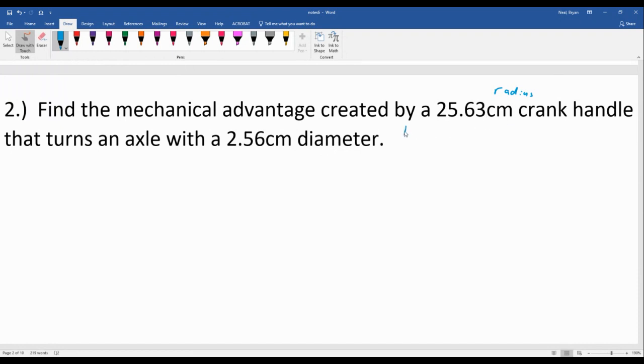So a diameter is two times radius, which means that if I take 25.63 and I multiply it by two, then I'm going to get that this diameter is 51.26.